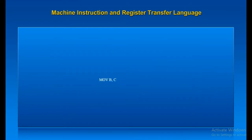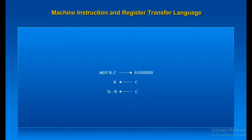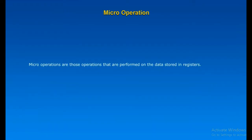For example, Move B, C or Move B, M — written in assembly language, which is in human-understandable form. Move B, C means copy source register C's content to destination register B. We can express this action in Register Transfer Language, RTL. The RTL equivalent instruction is B ← C. If this happens at time cycle T0, it is written as T0: B ← C.